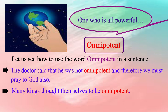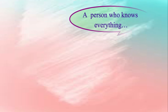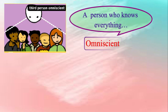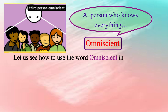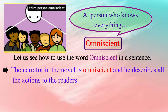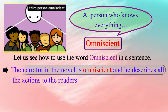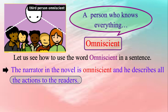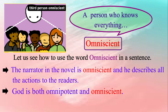Let us see the next expression. A person who knows everything, or we can simply say omniscient. To be omniscient is to know everything. If you describe someone as omniscient, you mean they know or seem to know everything. This often refers to a special power of God. Let us see how to use the word omniscient in a sentence. Please repeat after me: The narrator in the novel is omniscient and he describes all the actions to the readers. God is both omnipotent and omniscient.